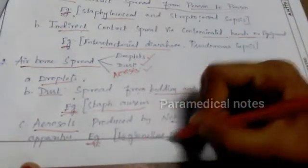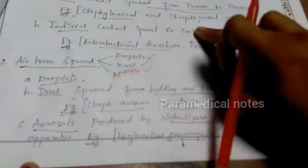The third airborne route is aerosols produced by nebulizers and humidifiers. The example organisms for this are Legionella and Haemophilus. If you write examples, that gives a perfect answer in the exam.